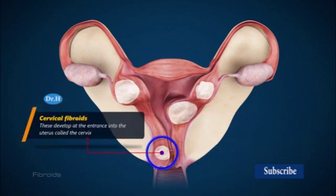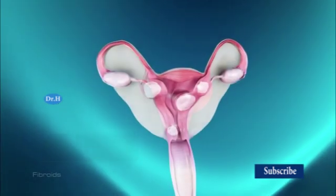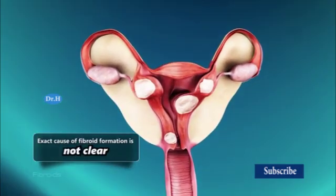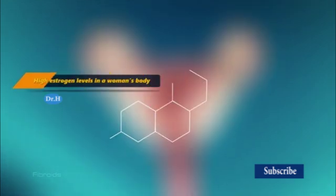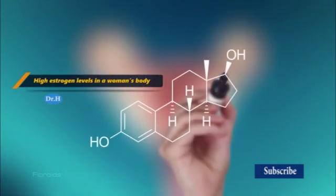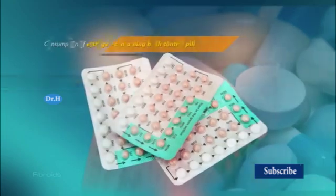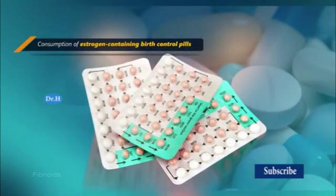Cervical fibroids develop at the extent into the uterus called the cervix. Causes of fibroids: the exact cause of fibroid formation is not clear. However, it may be associated with high estrogen levels in a woman's body.